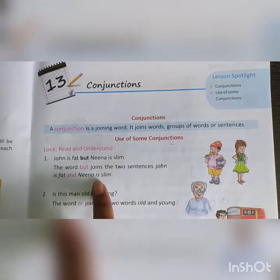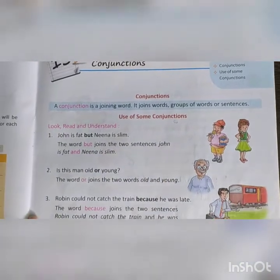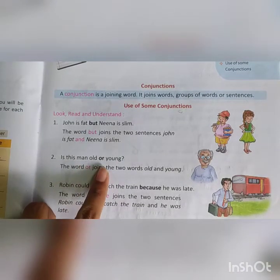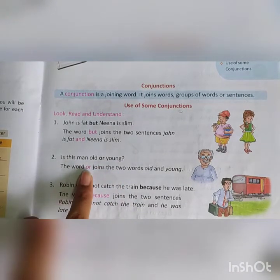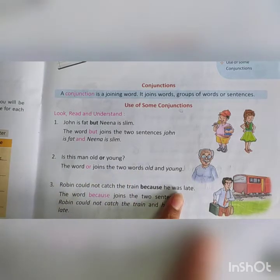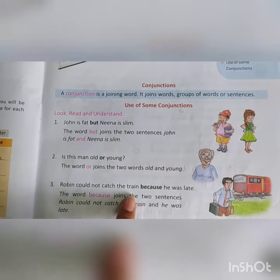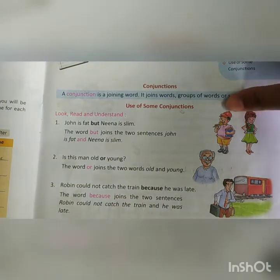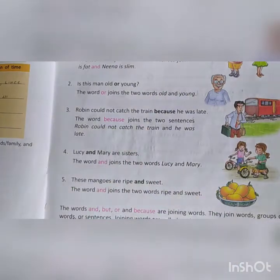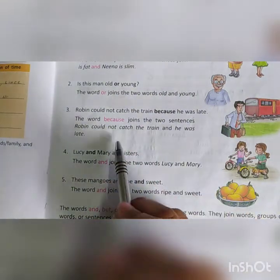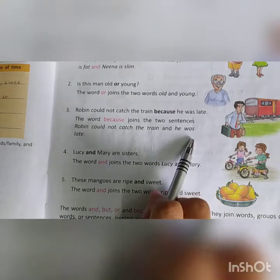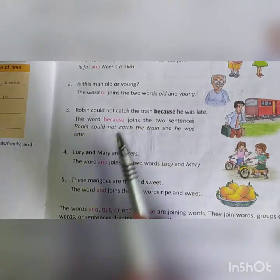John is fat but Nina is slim. Look at the second example. Is this man old or young? The word 'or' joins the two words, old and young. Robin could not catch the train because he was late. The word 'because' joins the two sentences: Robin could not catch the train, and he was late. So 'because' here is the joining word.